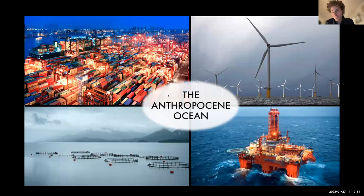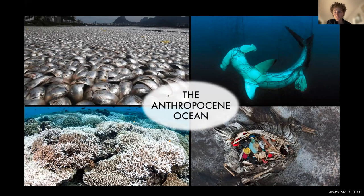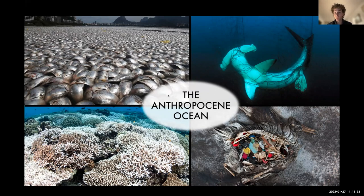This expansion of humanity into the ocean — the Anthropocene Ocean — also comes with a darker side. A dead zone with anoxia in Rio de Janeiro in 2016 with millions of fish dead from lack of oxygen; hammerhead sharks caught in fishing nets; bleached coral reefs in Belize; the stomach content of a black-footed albatross in Hawaii full of plastics mistaken for food.